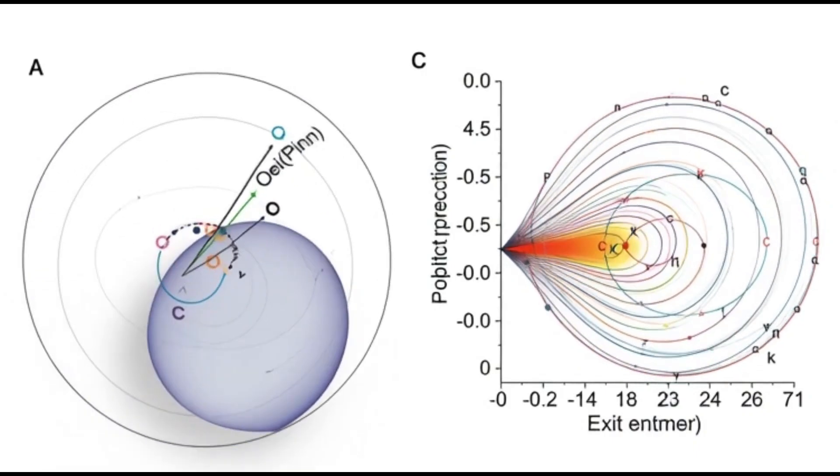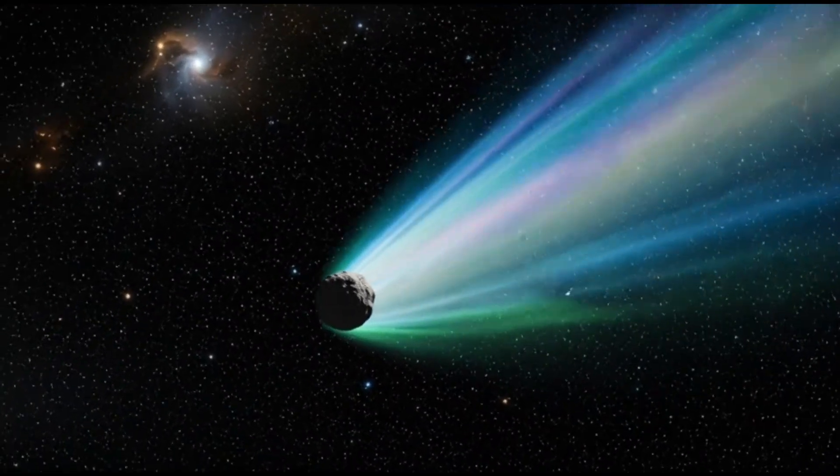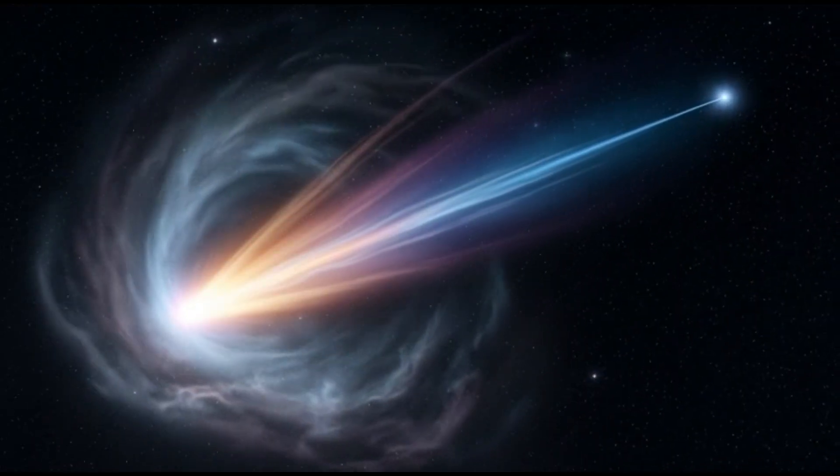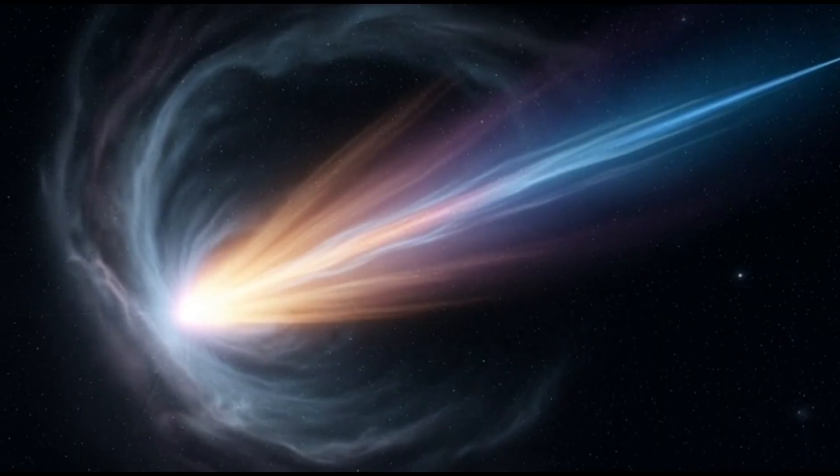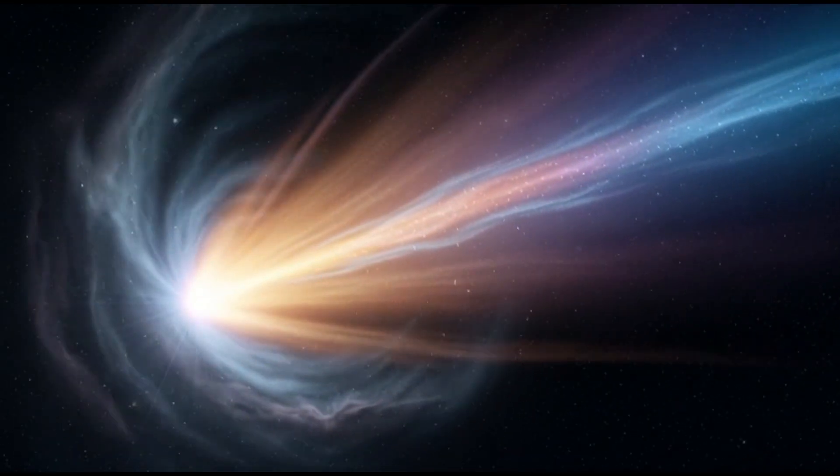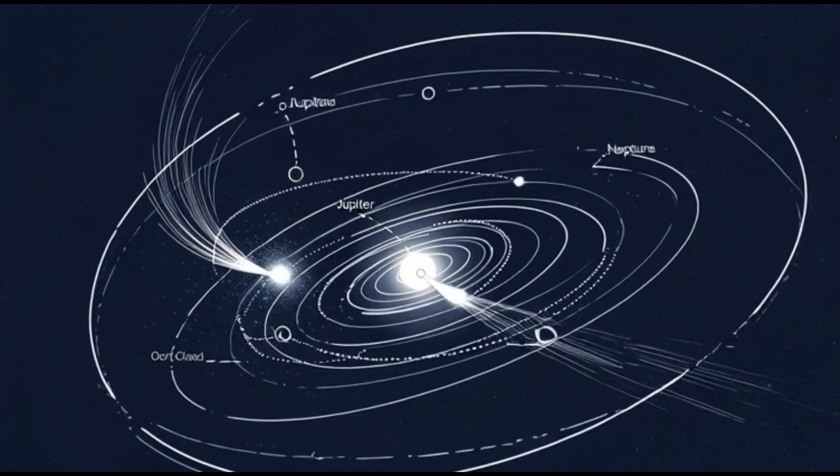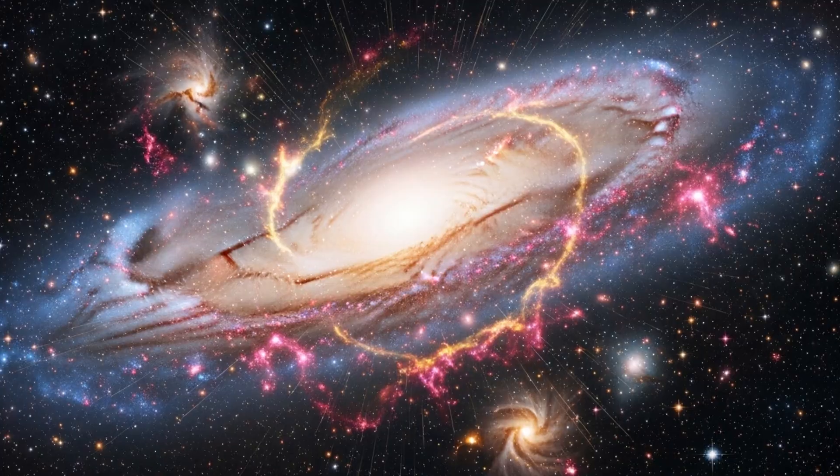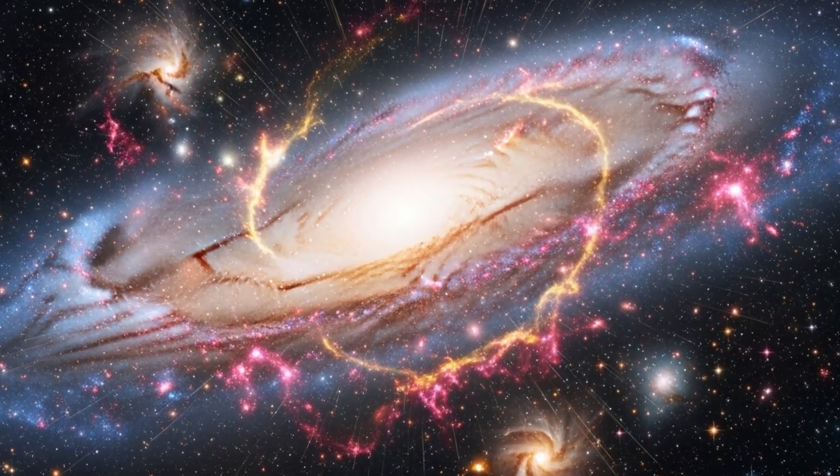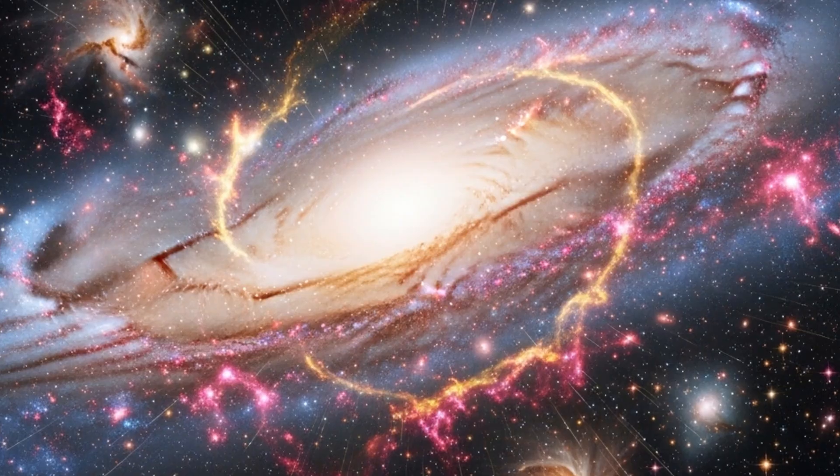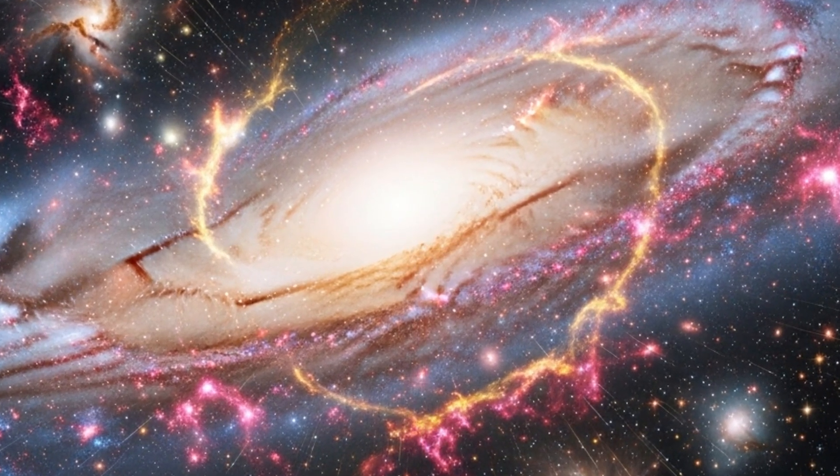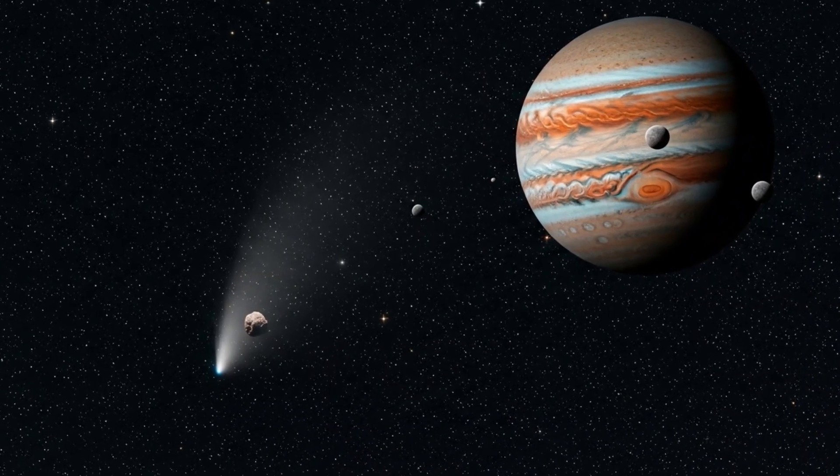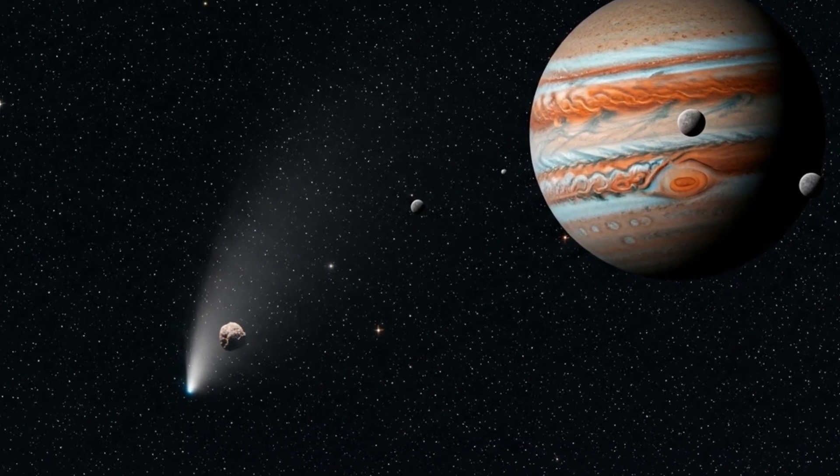The path it carved through the sky wasn't a gentle loop, it was a one-shot pass. Instead of circling the sun, 3i Atlas was on a hyperbolic track. Go fast enough, and you don't stay. You break free and keep going. At roughly 58 kilometers per second while still near Jupiter, it had more speed than any object we've tracked in our system. A hyperbolic orbit means this rock came from between the stars and is destined to return to them.